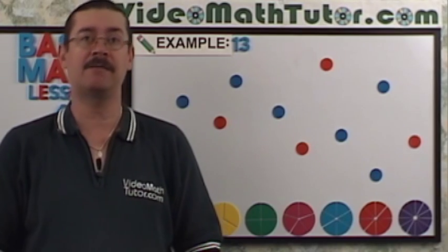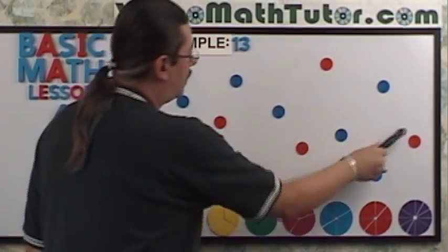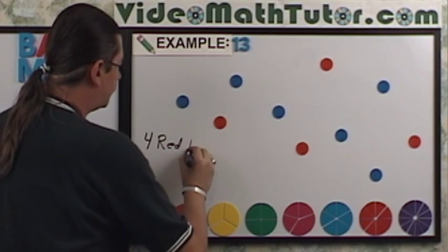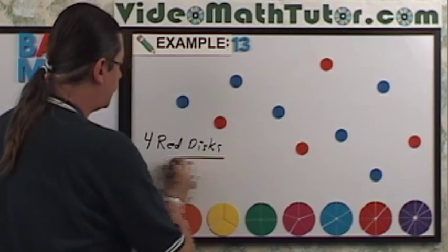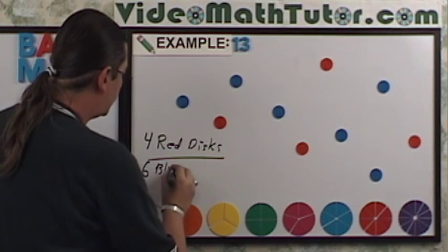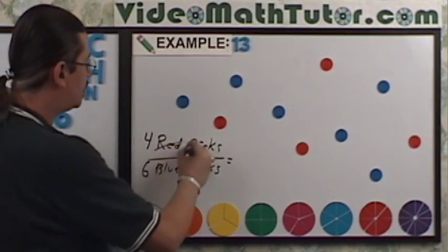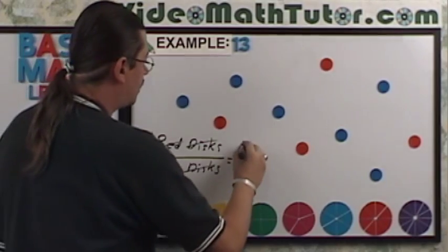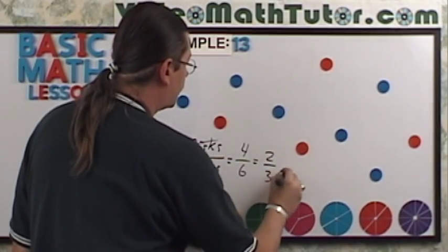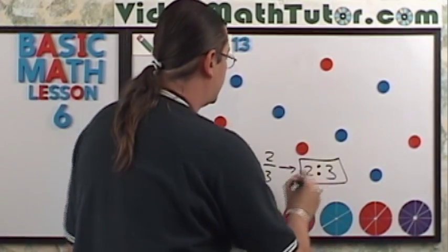For this example, I'd like to find the ratio of red discs to blue ones. So I have one, two, three, four red discs. Four red discs to how many blue ones? One, two, three, four, five, six. I have six blue discs. Well, I don't really need the words red, blue discs and stuff. So this is really just 4 to 6, but it's not reduced. So this is the same thing as saying 2 thirds, which we're going to rewrite as 2 to 3. And that is my answer.